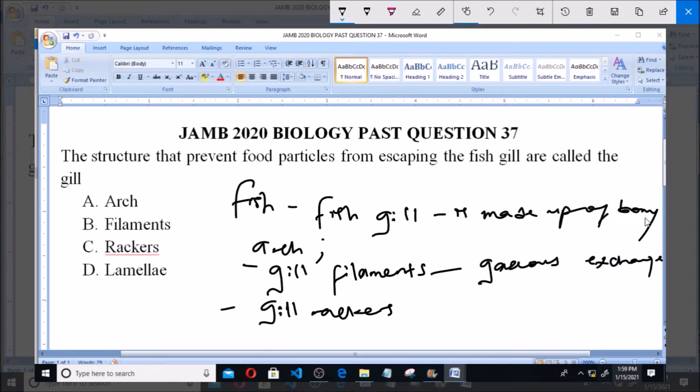in the gill filament of the gill. Then, the gill rakers is the part of the gill that acts as a food strainer. It prevents the movement of food in or out